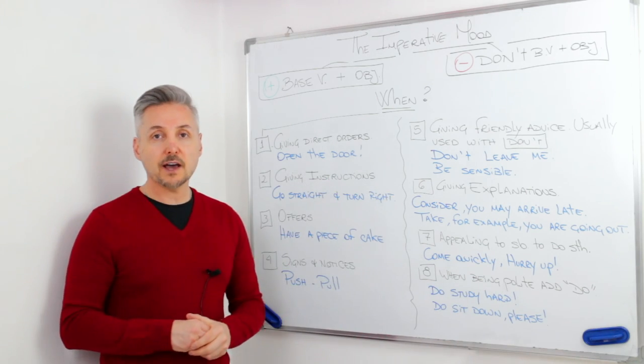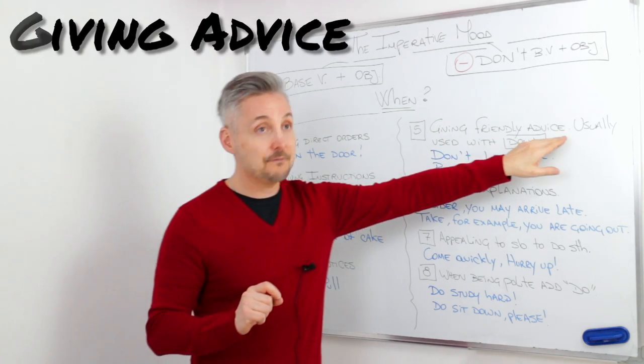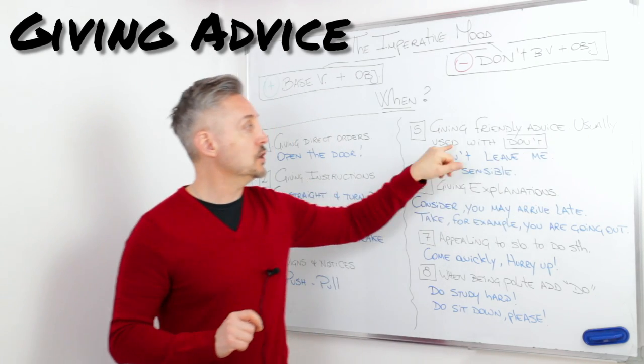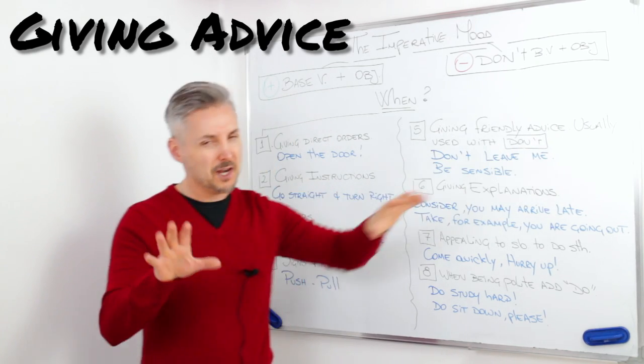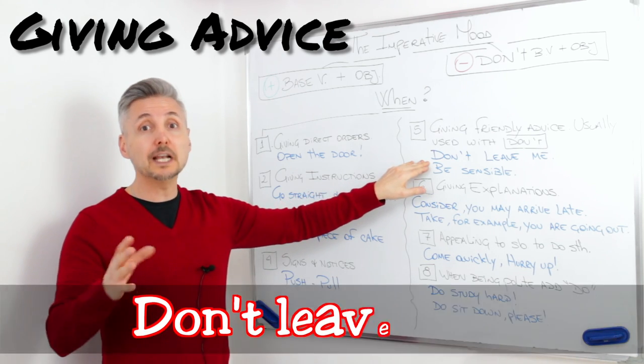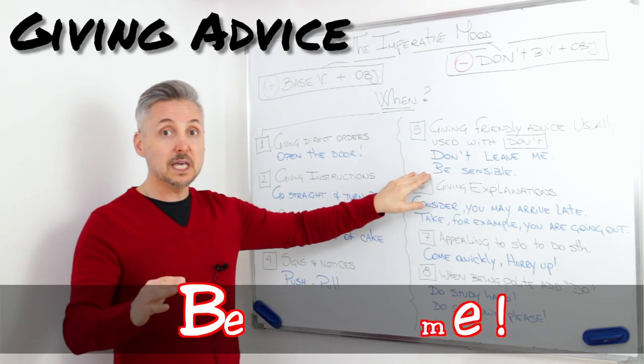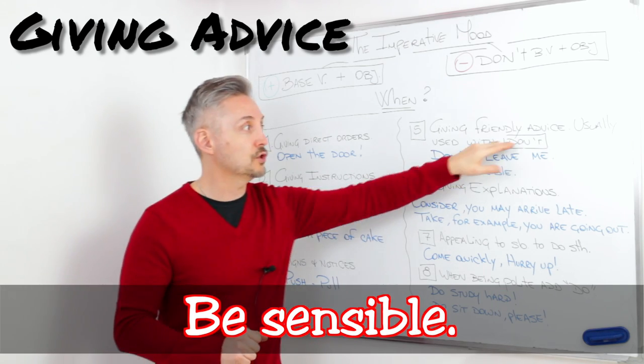Number five, and here we're getting a little bit more complicated. Giving friendly advice, usually used with don'ts, but not always. The example here is don't leave me. This is imperative. Or be sensible without don't.